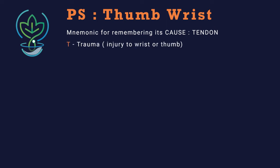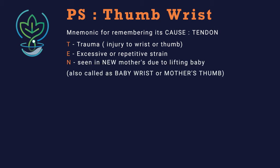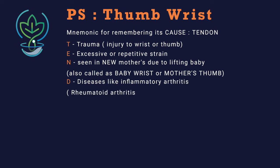E stands for excessive or repetitive strain. N stands for new mothers, as it is commonly seen in new mothers due to lifting the baby — it is also called 'baby wrist' or 'mother's thumb.' D stands for diseases like inflammatory arthritis and rheumatoid arthritis, which are also common causes.